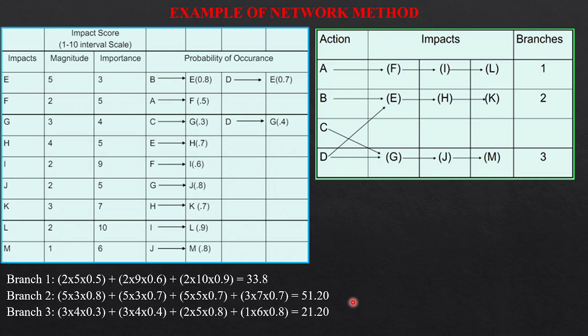Similarly, I calculate for branch 3. And so, the grand network index is 106.2. This is how we have to calculate the network method and the indexes.